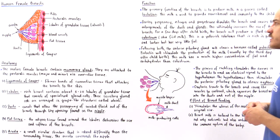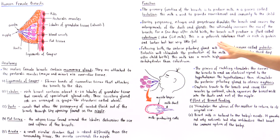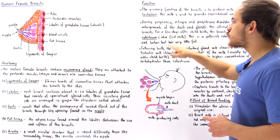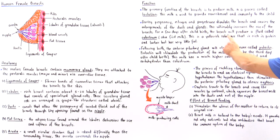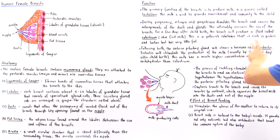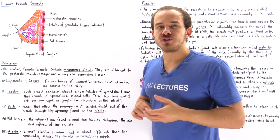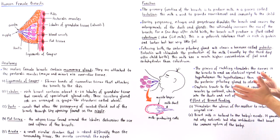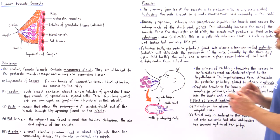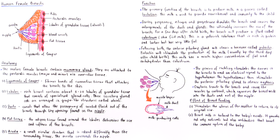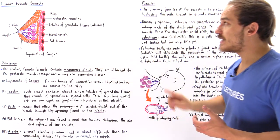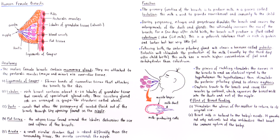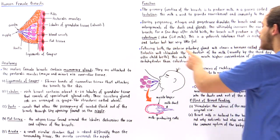For a few days following childbirth, the breast will produce a fluid known as colostrum, also known as first milk. Colostrum is a yellowish substance that is rich in protein and lactose but has a relatively low concentration of fat. It is usually produced before childbirth and for several days following. The anterior pituitary gland will then release a hormone known as prolactin, which stimulates the mammary gland cells to produce milk that is different from colostrum.